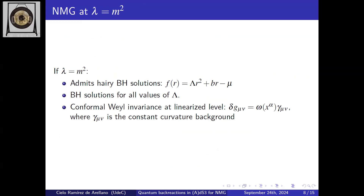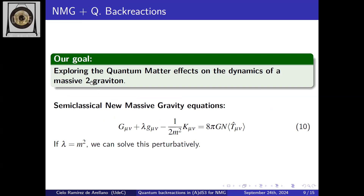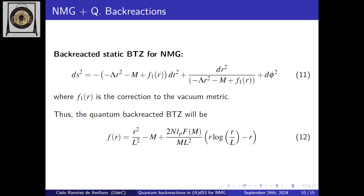At this special parameter point, the theory admits hairy black hole solutions, black hole solutions for all values of the cosmological constant, and a conformal bilinear invariance at the linearized level — which is key for mixing both ingredients. We can only solve the semi-classical equations at this special point. The quantum backreacted metric function contains the standard AdS BTZ terms as leading orders, but new sub-leading orders are of order r log r and r.